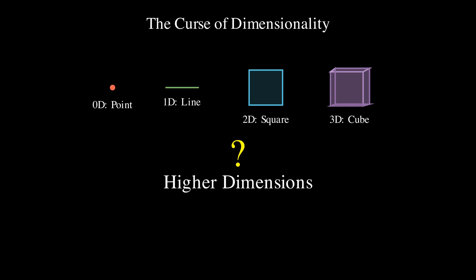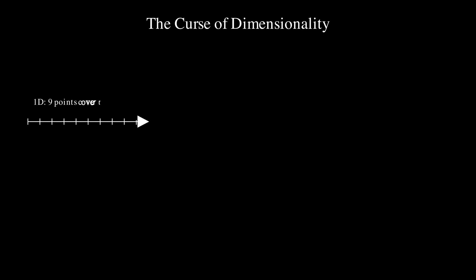So what exactly is this curse? As we progress from lower dimensions to higher ones, our intuition starts to fail us. Think about it this way, when you have 9 points on a 1-dimensional line, they cover the space quite well. Those same 9 points, arranged in a 2-dimensional square, leaves noticeable gaps.